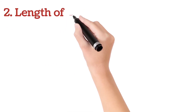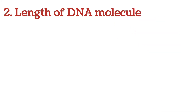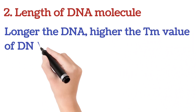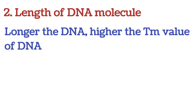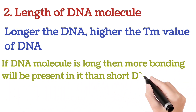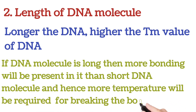The second factor is the length of the DNA molecule. The key point is: longer the DNA, higher the Tm value. Simply, if DNA is long, more energy and temperature is required to melt 50 percent of it. If DNA is short, less temperature and energy is needed. So longer DNA strand means higher Tm value, and shorter DNA means lesser Tm value.